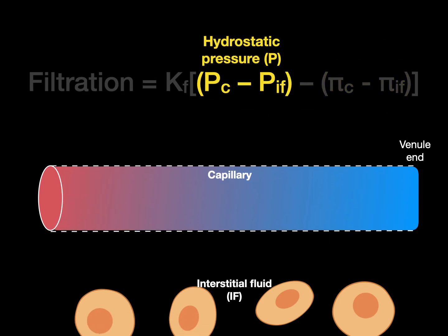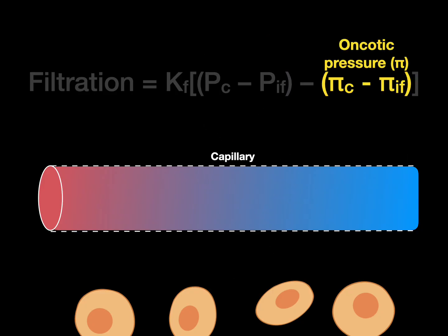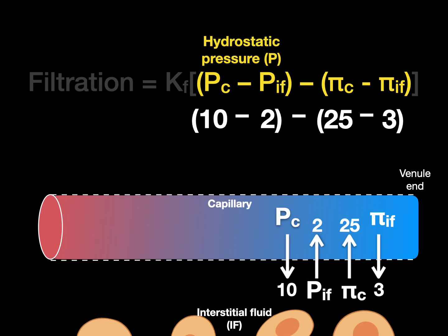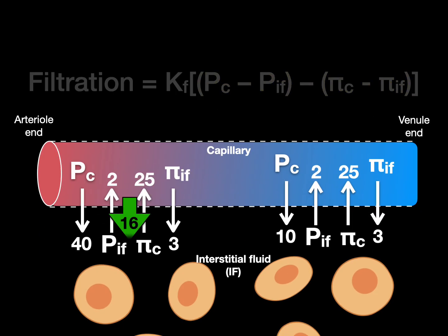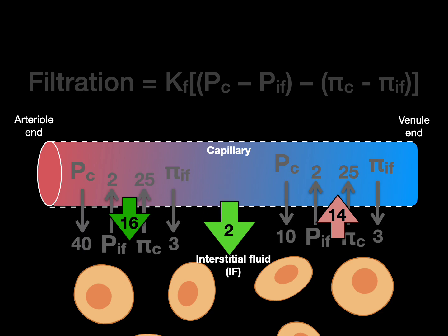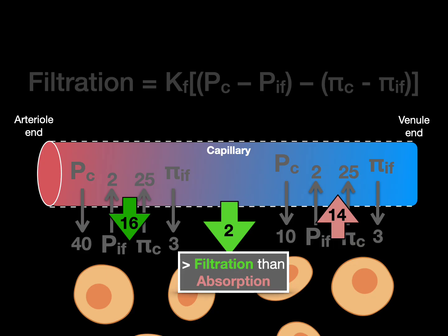At the venous end, capillary hydrostatic pressure drops to only 10 millimeters of mercury because much fluid has already been lost. With the same interstitial pressures and the same oncotic pressure of 25 (since albumin doesn't leave), the net filtration pressure is: (10 − 2) − (25 − 3) = 8 − 22 = negative 14 millimeters of mercury, indicating net absorption. Adding the arterial and venous ends together gives a net force of positive 2 millimeters of mercury — meaning there is a net outflow of fluid in most systemic capillaries, with more filtration than absorption.